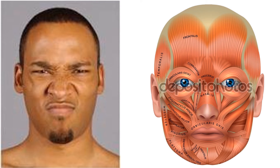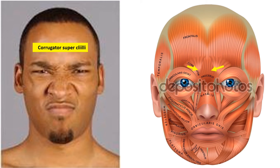This person is wrinkling his forehead between the eyebrows. If we look to the right, there is a muscle in the middle just superior to the nose called the corrugator supercilii. When this muscle contracts, it produces the appearance of a look of disgust.